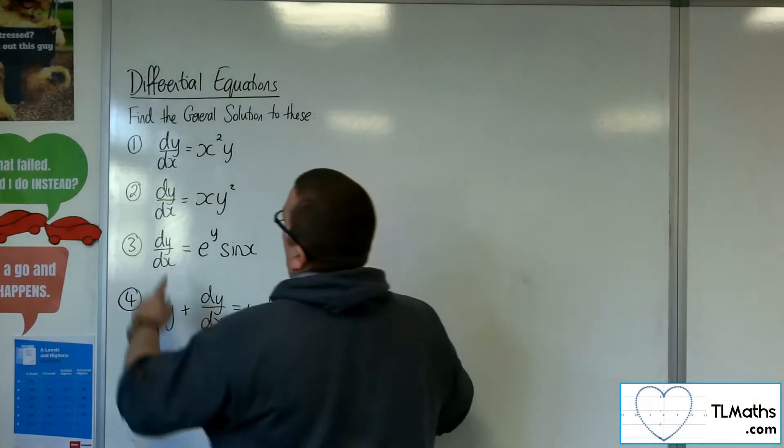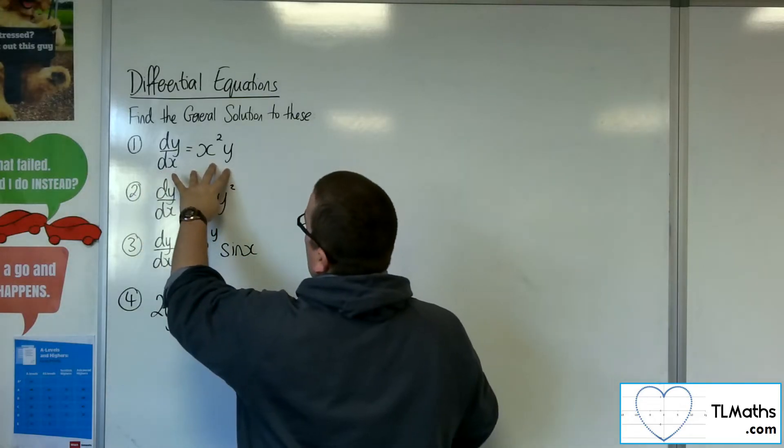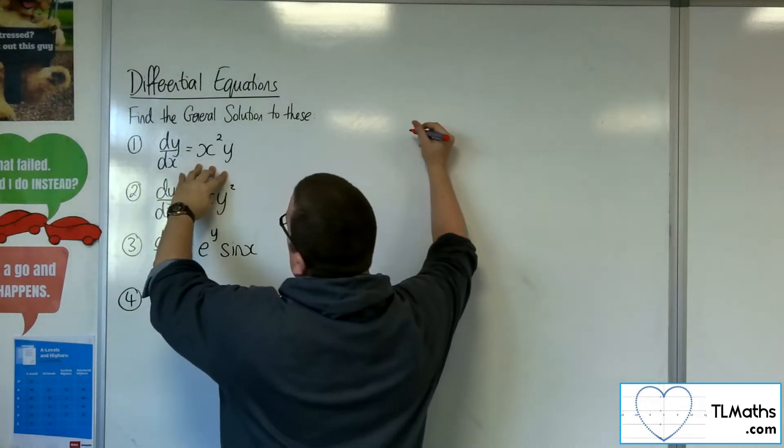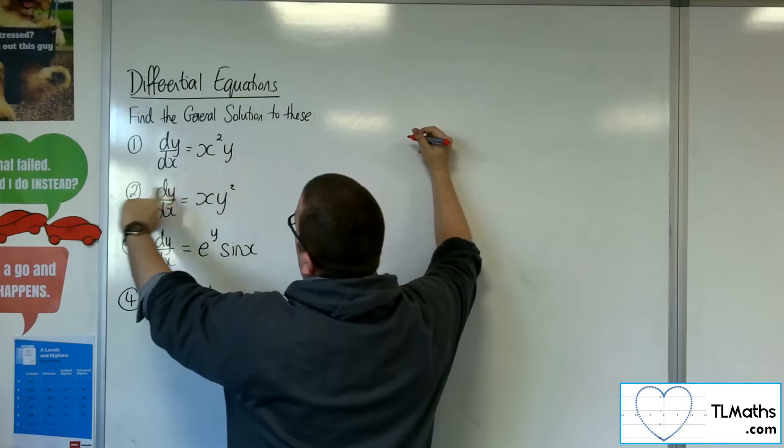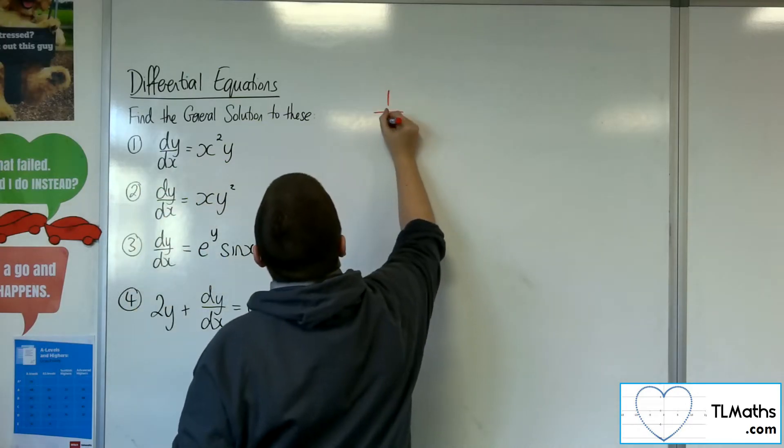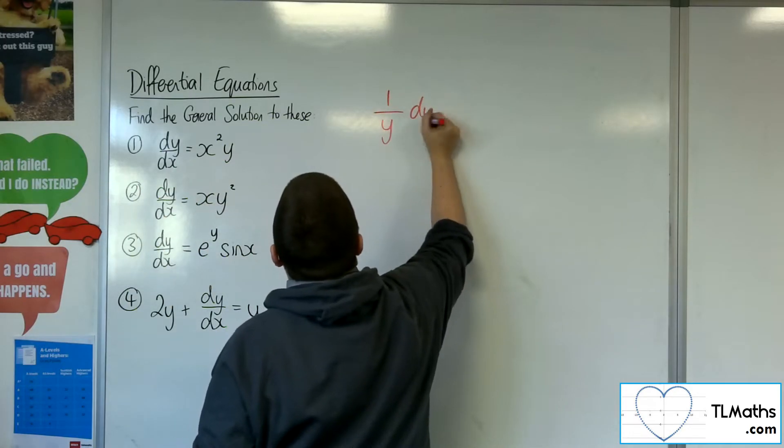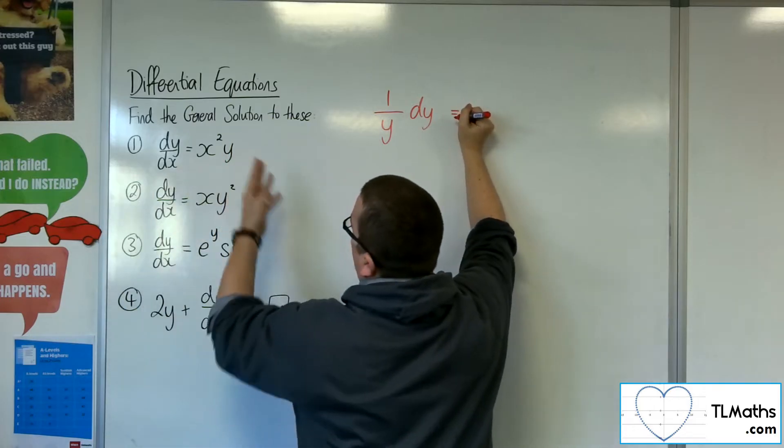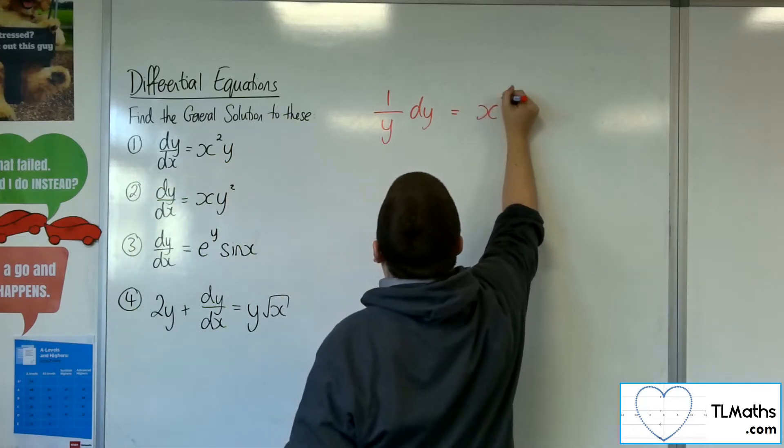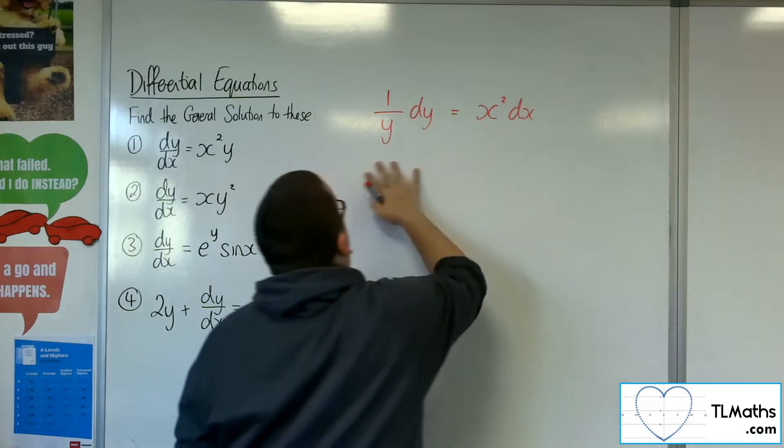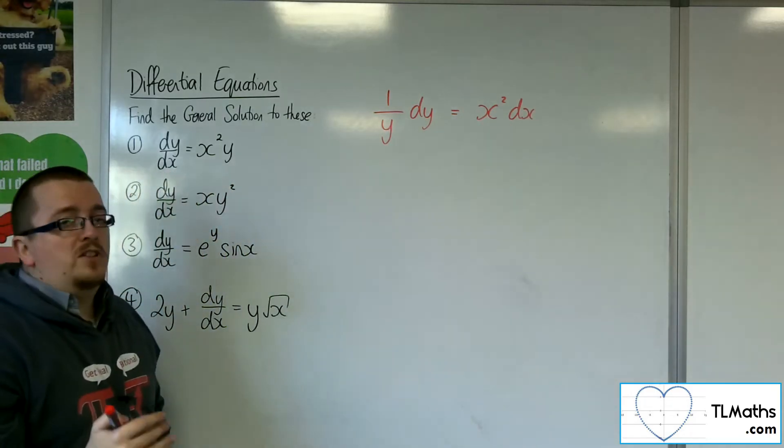So let's have a look at number one. We've got dy/dx equals x squared y. So what I can do is divide both sides by y, leave the dy where it is, and multiply both sides by the dx.